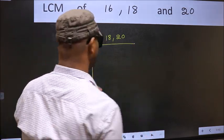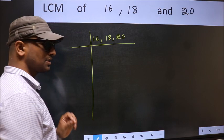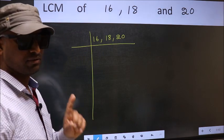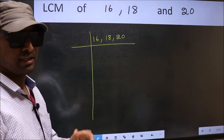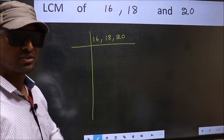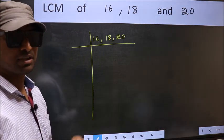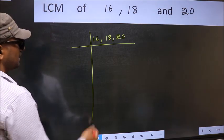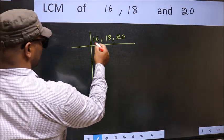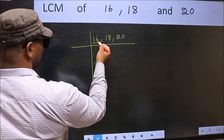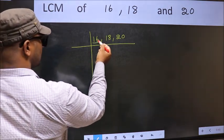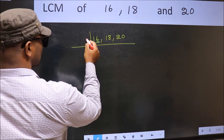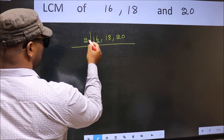This is your step 1. Now you should focus on the first number, which is 16 here. Last digit 6, so take 2 as the divisor.